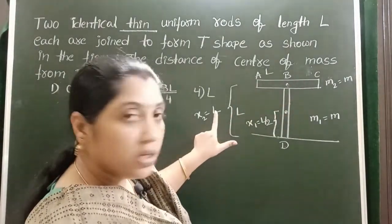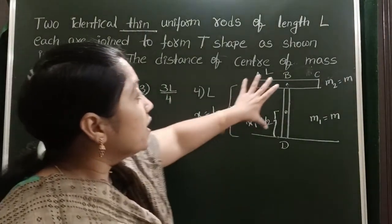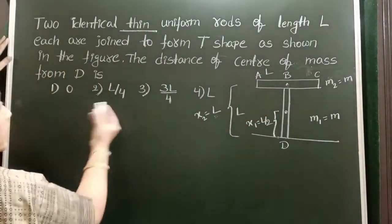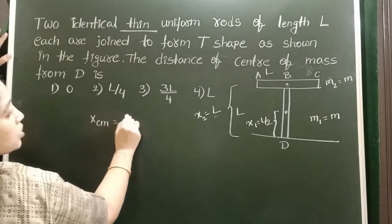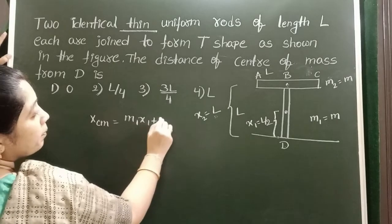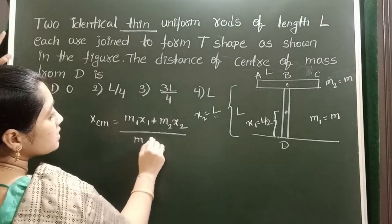This length equals L. Now find out the center of mass of this T shape. Take the formula: XCM equals M1 X1 plus M2 X2 divided by M1 plus M2.